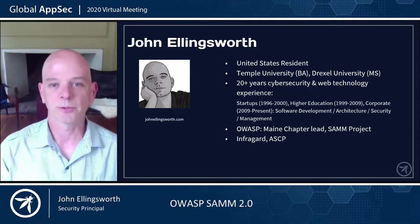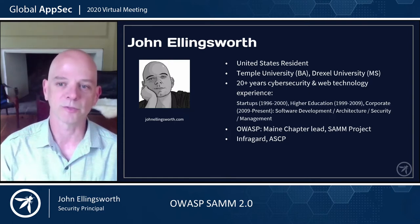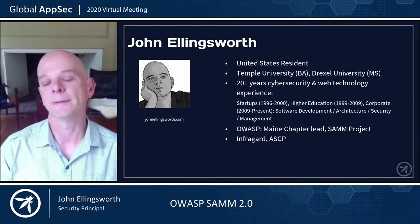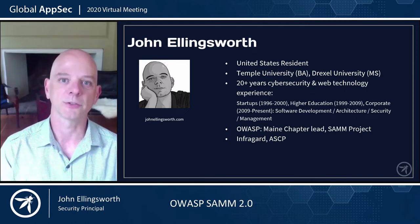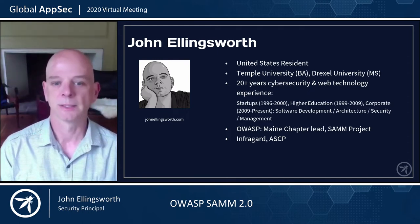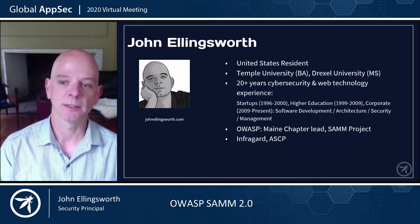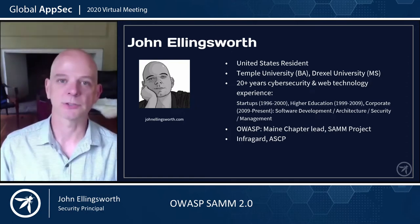For background, my name is John Ellingsworth. I live in the United States, in the New England area. I've been involved with cybersecurity and web technology for over 20 years, working in startups, higher education, and now the corporate world, doing software development, architecture, security, and software development management. Currently, I'm a member of OWASP — a main chapter lead and a member of the SAMM core project team. I'm also a member of InfraGard and ASCP, where I contribute occasionally doing talks and presentations.